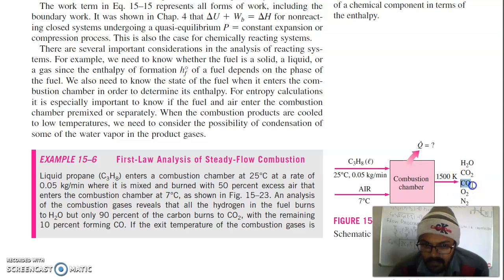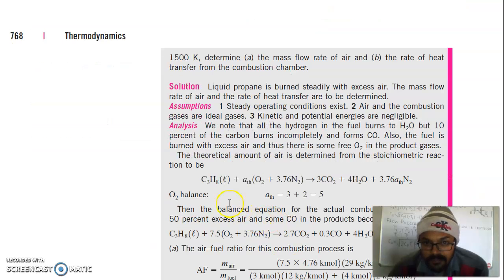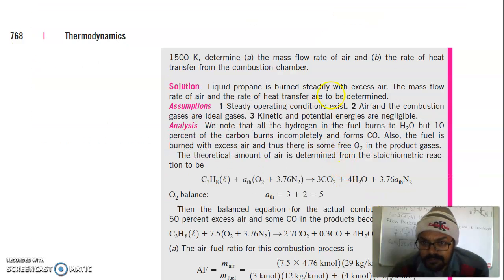The remaining 10% of carbon forms carbon monoxide. If the exit temperature of the combustion gas is 1500 Kelvin, determine the mass flow rate of air and the rate of heat transfer from the combustion chamber.